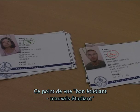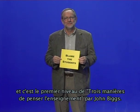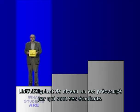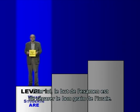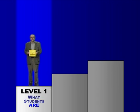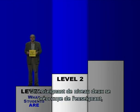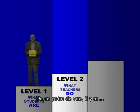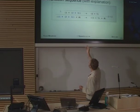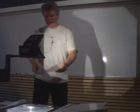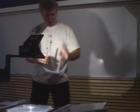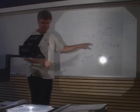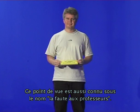This 'good student, bad student' perspective is also known as the 'blame the students' approach to teaching, and is level one in John Biggs' three levels of thinking about teaching. A level one teacher is concerned with what students are — for him, the exam is a matter of sorting the good students from the bad. A level two teacher has the focus on the teacher and is concerned with what the teacher does. This perspective is also known as the 'blame the teacher' perspective.